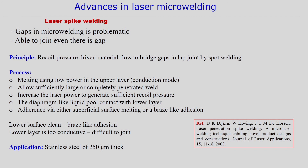In a lap joint configuration where two sheets have a gap between them, the top layer is melted using the laser and recoil pressure is created such that the molten material from the top layer attaches to the bottom layer, joining the two sheets even across a gap. The upper layer must be melted in conduction mode with sufficient power for complete penetration. Then laser power is increased to generate superficial recoil pressure to fill the gap with molten material. The diaphragm-like liquid pool makes contact with the lower layer, creating a curvature that bridges down to the bottom layer.